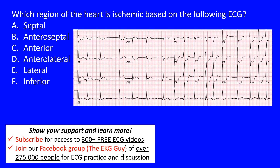Here we have a great question: which region of the heart is ischemic based on the following ECG? Imagine an 80-year-old gentleman coming in with substernal chest pain, diaphoretic — meaning they're sweating — and pale. Looking at this ECG, you notice an irregularly irregular rhythm. This is likely atrial fibrillation — no P waves, so we don't have a wandering atrial pacemaker or multifocal atrial tachycardia.